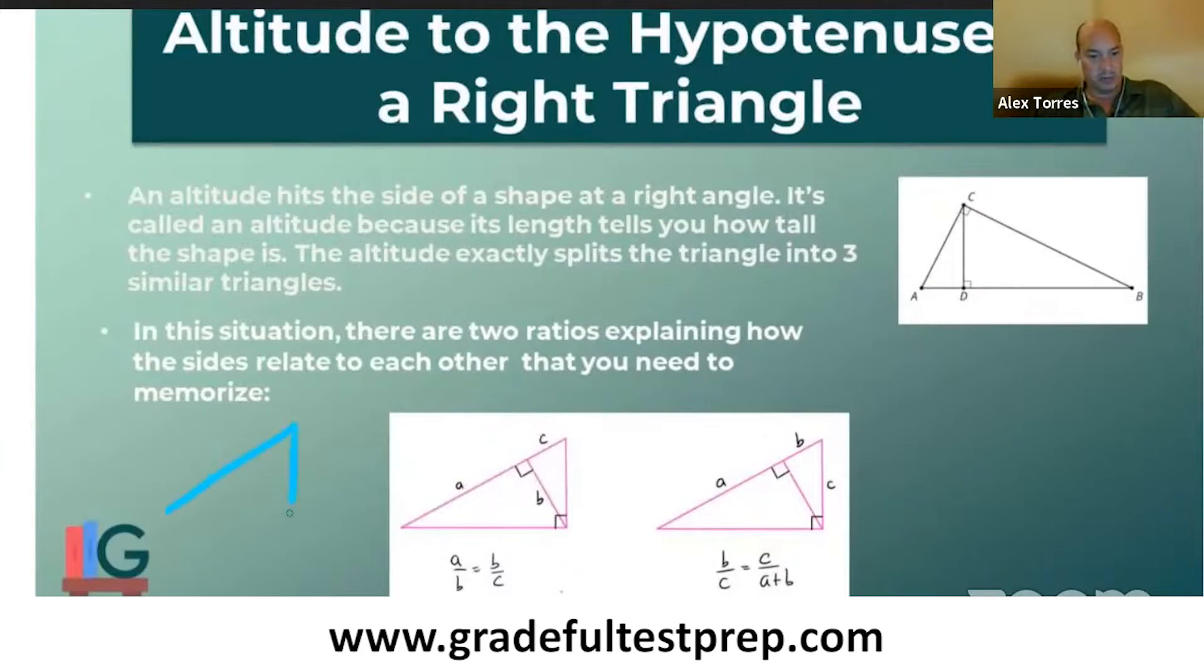So for instance, if we had a right triangle with an altitude, and so I've got my right angle symbols, and if we already knew that this length right here was five, and this length right here was three, and we were trying to find the length of the altitude, using that same ratio, five over X equals X over three, and you can cross multiply that, and you'd get X squared equals 15, square root of both sides, and X would be equal to the square root of 15, and that would be the answer there. So that's how that ratio gets set up.